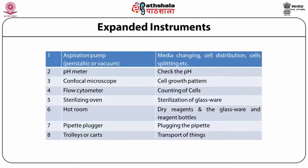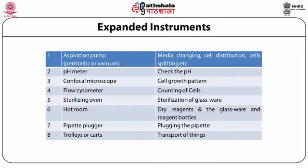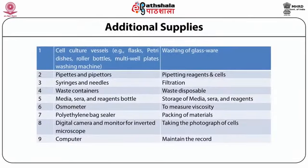A pH meter is needed because pH is a basic factor responsible for maintaining cell growth, and exact pH can be measured with it. Confocal microscopy is used to check the pattern of cell growth. Flow cytometry can be utilized for cell counting. A sterilizing oven can sterilize glassware and is a better option than autoclave for that purpose. Hot air is required for drying reagents and storing glassware. Pipette pluggers, trolleys, and carts for transporting equipment also fall under expanded instruments.